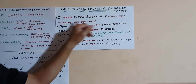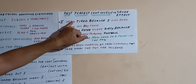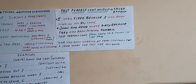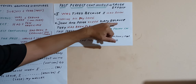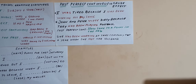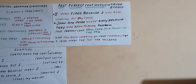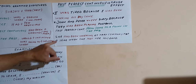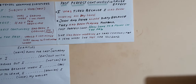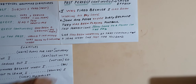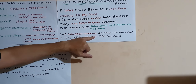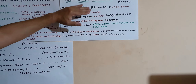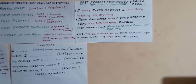So with the past perfect continuous, you are showing the effect of the first action. 'I was tired because I had been working all day long.' Or: 'John and Peter were dirty because they had been playing football.' The past perfect continuous can also be used to show how long to a point in the past. For example: 'She had been working at the company for a year when she met her husband.' So how long to a point — which point? When she met her husband, she had been working at the company for a year.